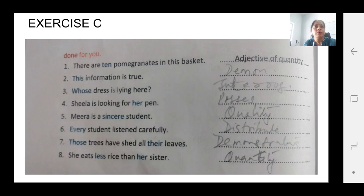Next Exercise C. You have to identify the adjectives and type of the adjective. First one is done. There are 10 pomegranates in this basket. So 10 is an adjective of quantity.